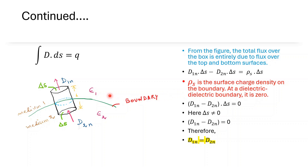The contribution from the top of the box is D1N·ΔS, and from the bottom is −D2N·ΔS. So the left-hand side becomes (D1N − D2N)·ΔS, which equals ρS·ΔS, where ρS is the surface charge density. However, at a boundary separating two dielectric media, there is no surface charge density, so ρS equals zero. Since ΔS ≠ 0, we get D1N − D2N = 0, therefore D1N equals D2N. Hence, we have proved that the normal component of the displacement vector is continuous.